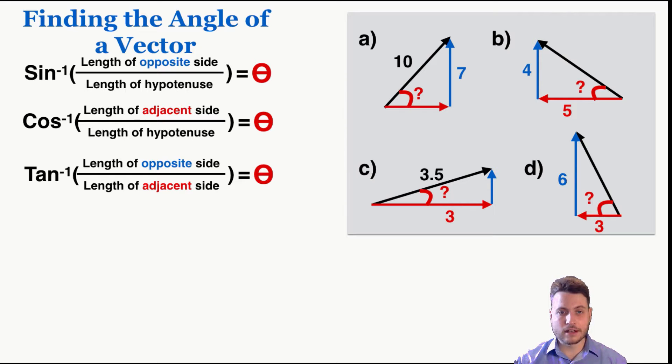So sine connects opposite and hypotenuse, cosine connects adjacent and hypotenuse, and tan connects opposite and adjacent.